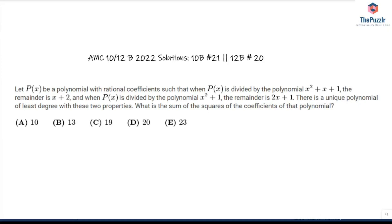Problem number 21 from the 10b, which was also number 20 on the 12b. We have a polynomial P(x) with rational coefficients such that when P(x) is divided by the polynomial x² + x + 1, the remainder is x + 2, and when P(x) is divided by the polynomial x² + 1, the remainder is 2x + 1. There's a unique polynomial of least degree with these two properties. What is the sum of the squares of the coefficients of that polynomial?